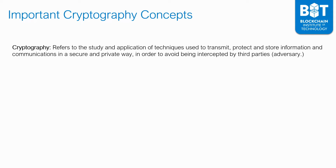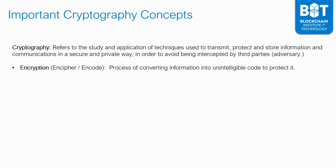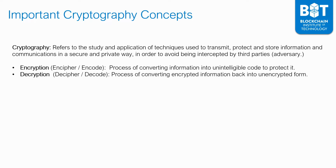Some key terms I want to cover: the first one is encryption. Encryption, also known as encipher or encode, is the process of converting information into unintelligible code to protect it. If you encrypt something, you can also decrypt it. Decryption, also known as decipher or decode, is the process of converting encrypted information back into unencrypted form.